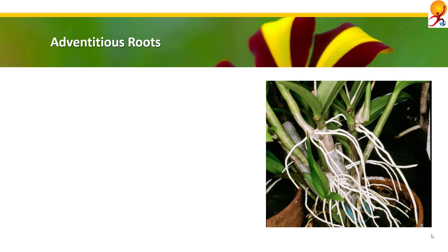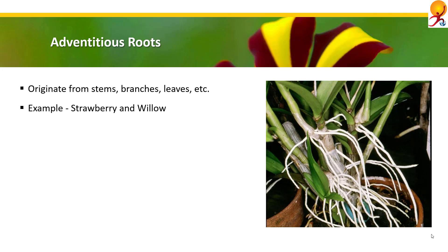Adventitious roots originate from the stem, branches, leaves, or old woody roots rather than the normal root system. For example, strawberry and willow. These roots develop to avoid stress, fight problems of nutrition deficiency, get sufficient oxygen, or sometimes to avoid too much oxygen. One important function of these roots is to help in vegetative propagation in many plants.